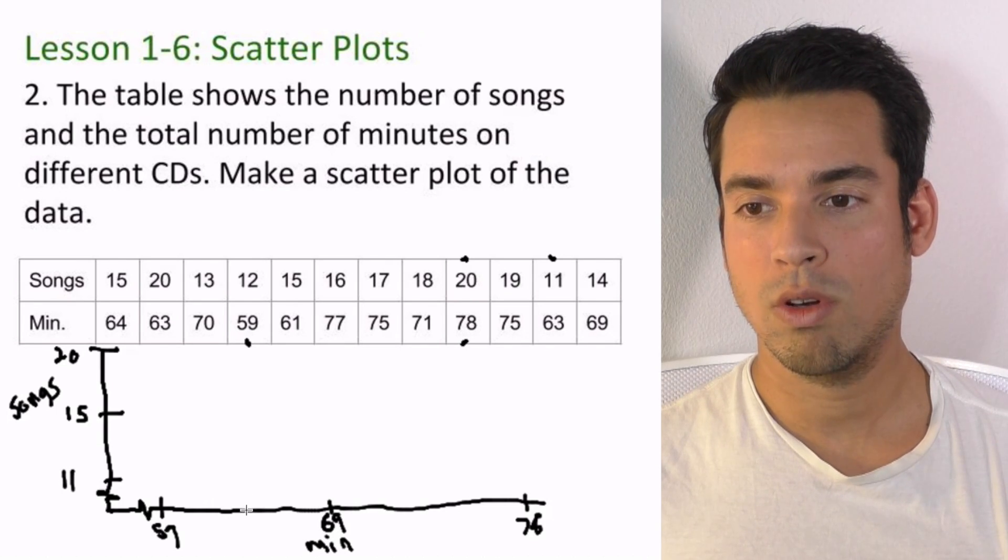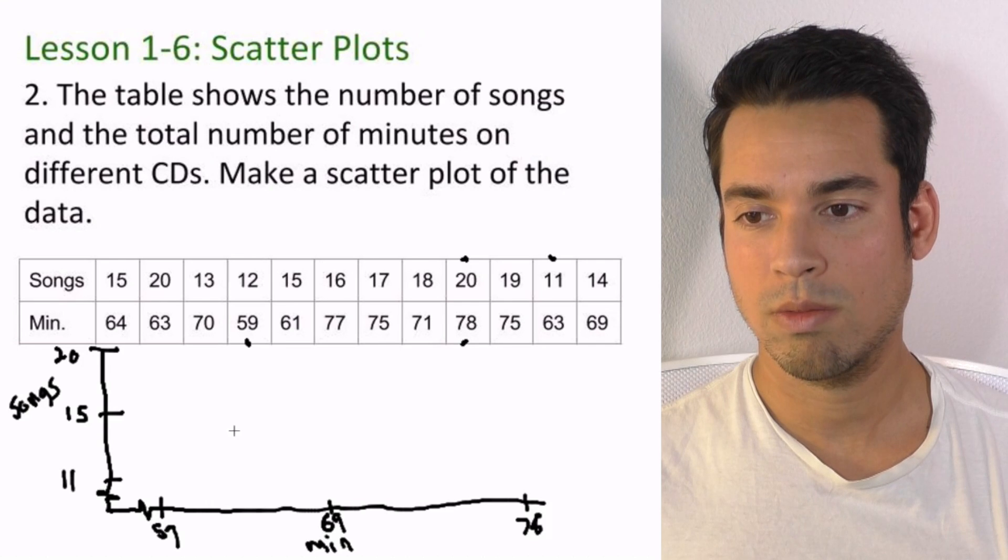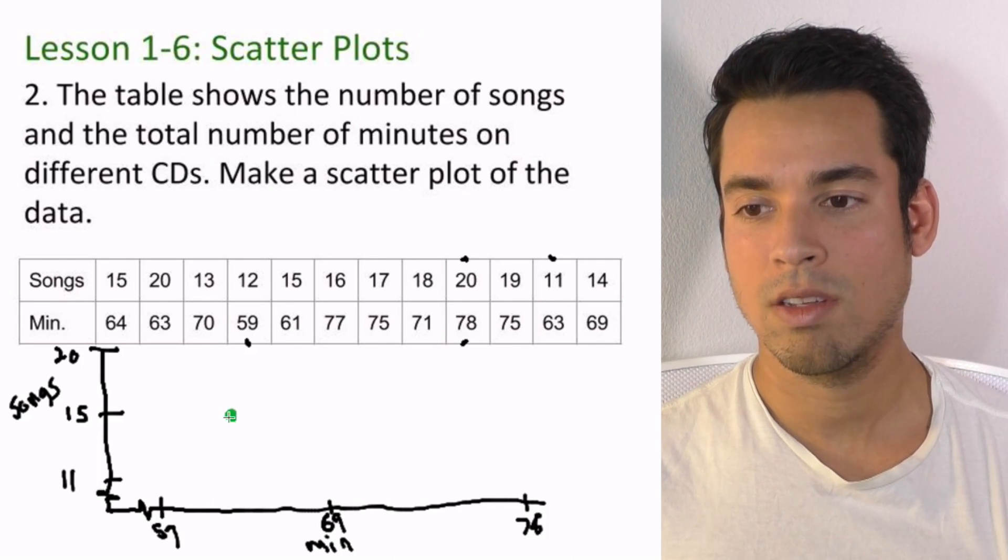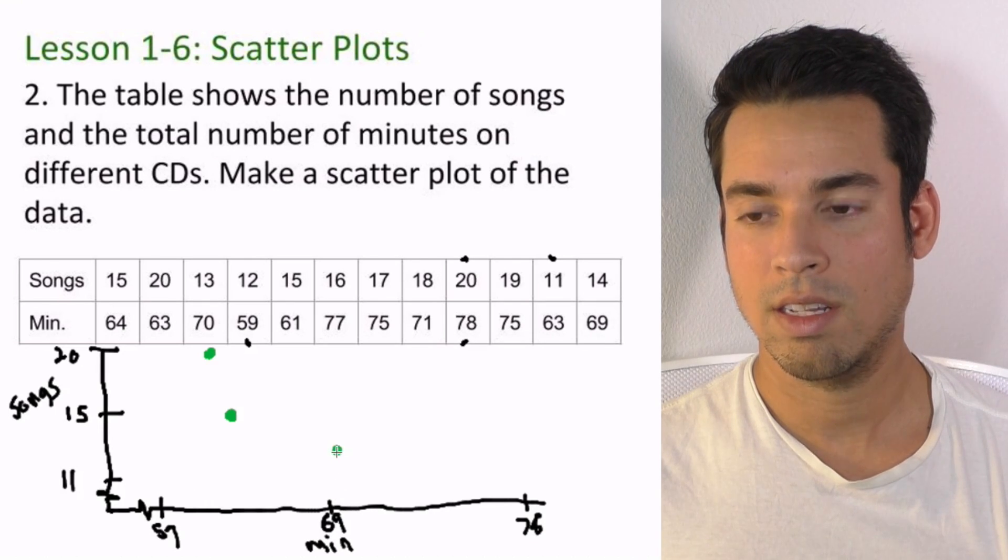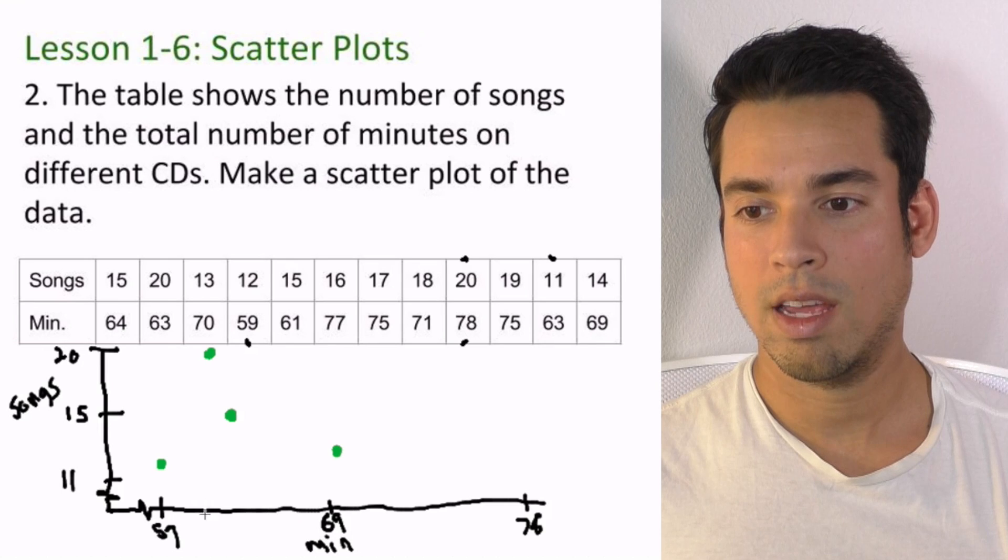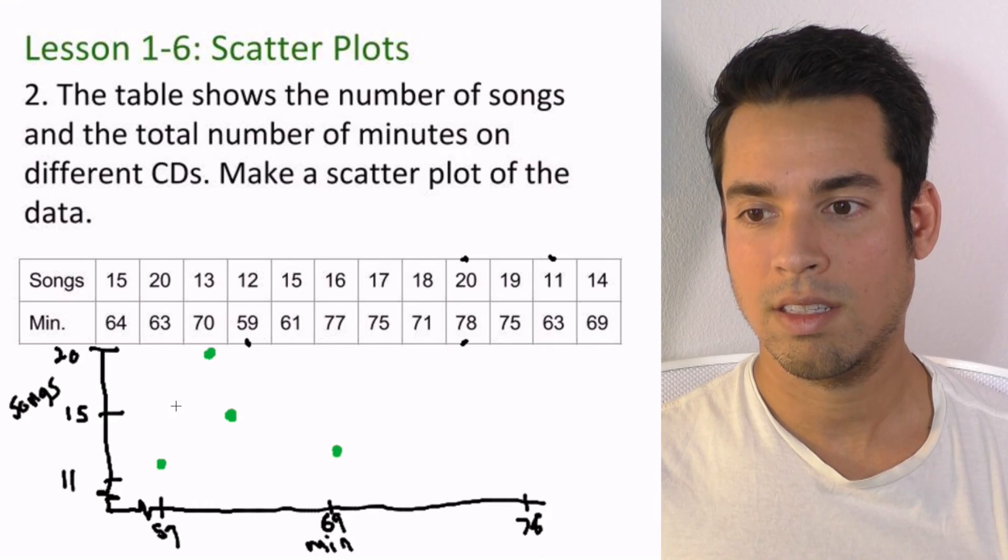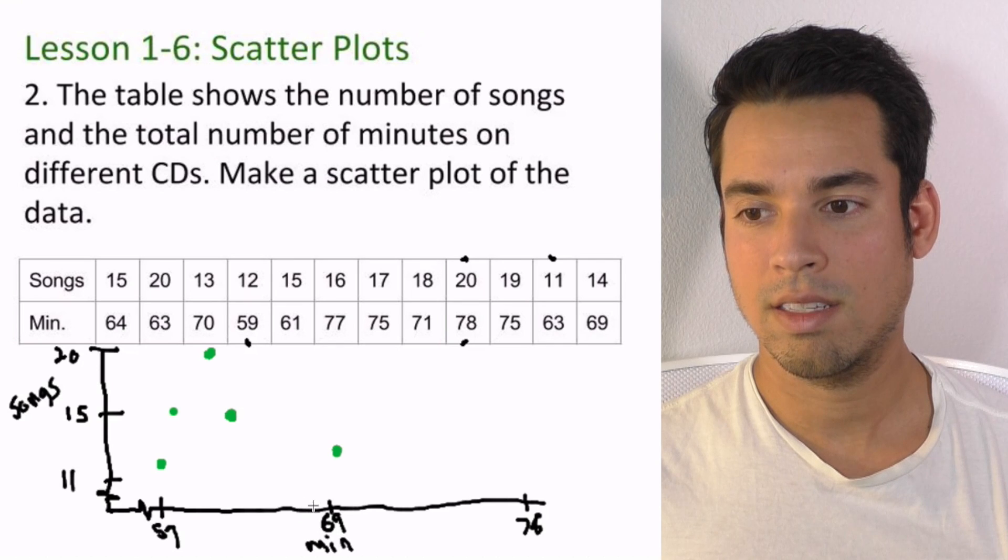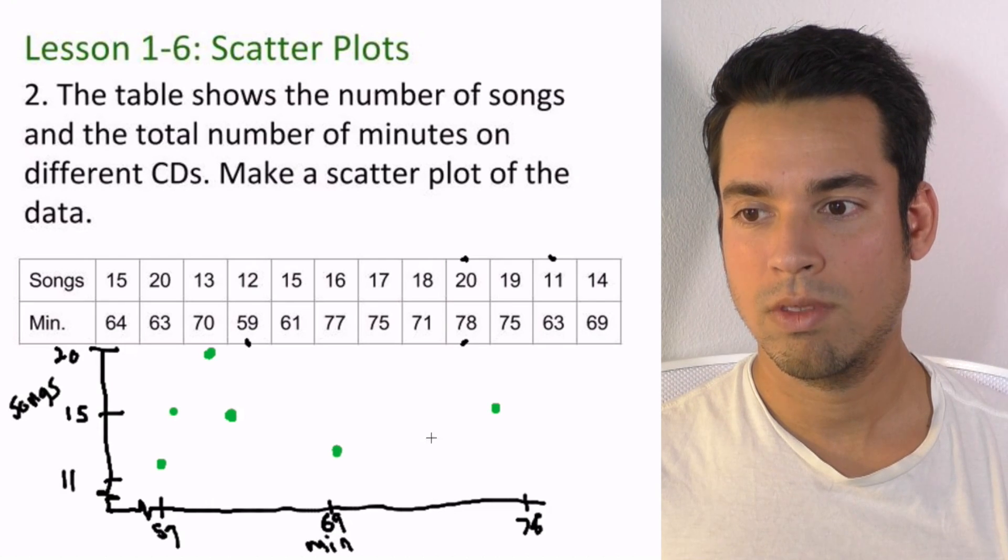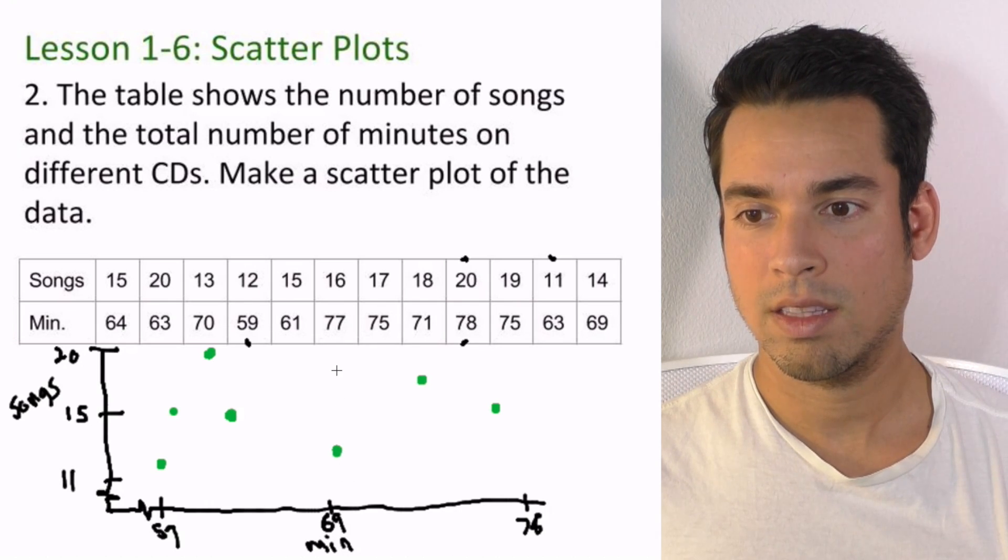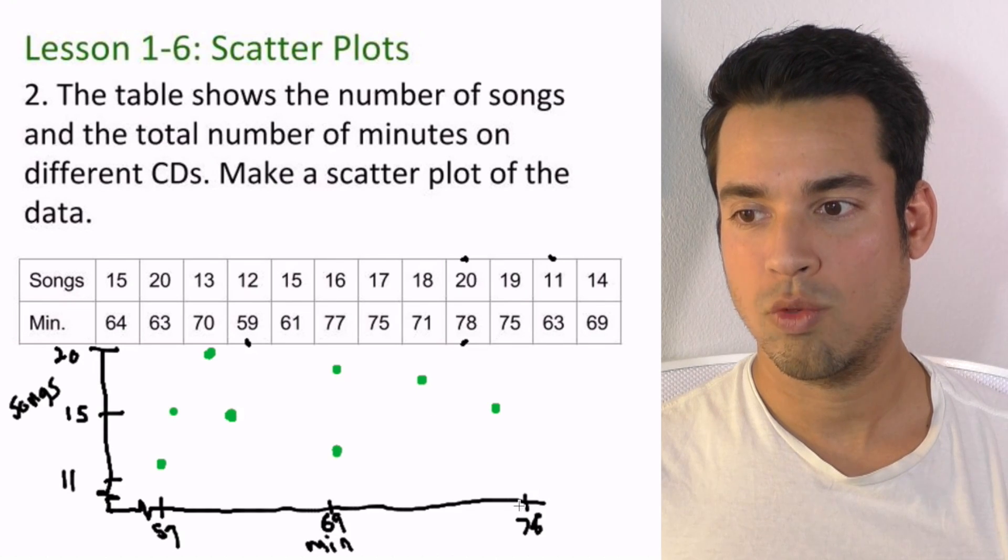Now let's just plot out the points. Let's do as many as we can - let's try and do them all. So 64 and 15, we'll say 64 is right around here somewhere, boom, 15 right. We're going x-axis for the minutes, y-axis for the songs. We got 63 and 20, boom. 70 all the way here and 13 like that. 59 down here and 12 on the songs. 61 and 15 is like this guy. 77 and 16 something like up here.